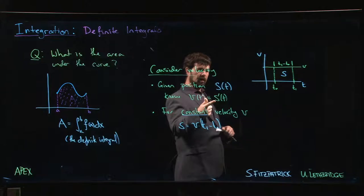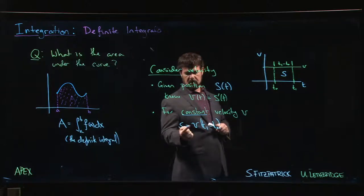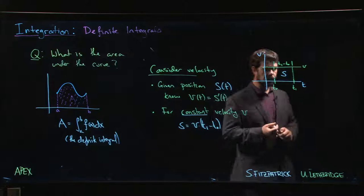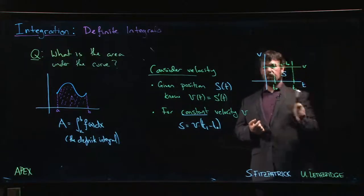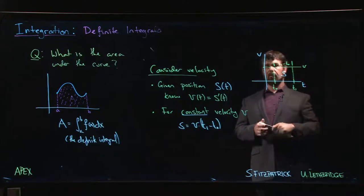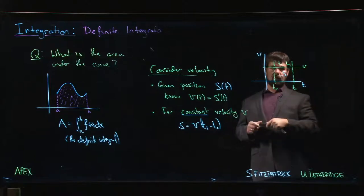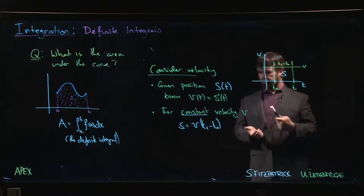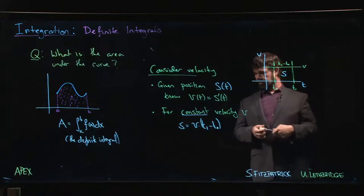So on the one hand, position is an antiderivative of velocity. On the other hand, we can get displacement in terms of an area when we're plotting velocity versus time. With constant velocity we get something like this. Let's go one step further.